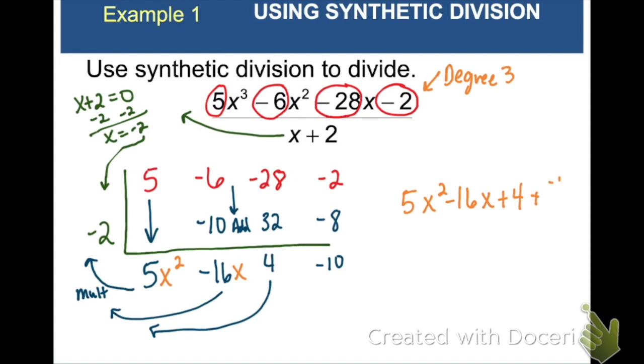We're going to write our remainder over x plus 2. Negative 10, in this case, was my remainder.